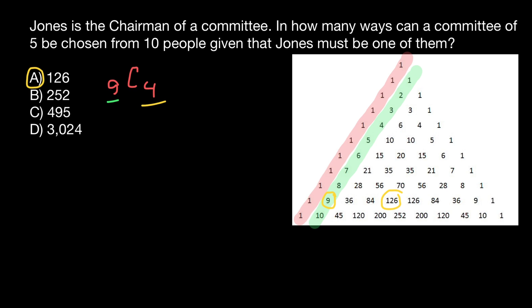What if we want to solve this problem using a formula? Here's the formula: n factorial divided by r factorial times n minus r factorial.